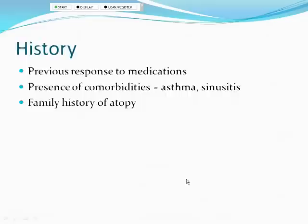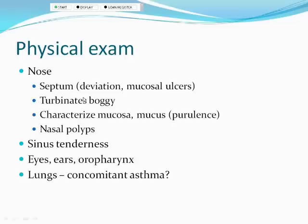Also ask about previous medications and experience with over-the-counter drugs like oxymetazoline. Discuss comorbidities and atopy history. The rule of thumb: if one parent has atopic disease, the child has about a 25% chance; if both parents have atopic disease — asthma, allergic rhinitis, or atopic dermatitis — about 50% of children will develop some atopic disease at some point.